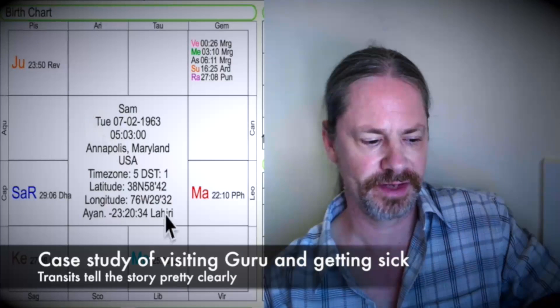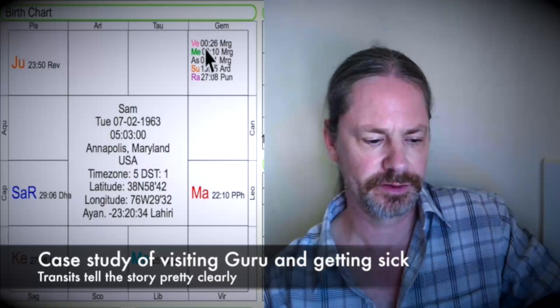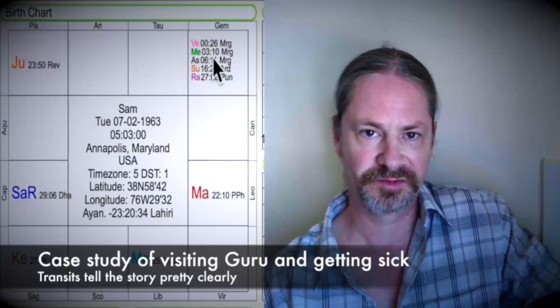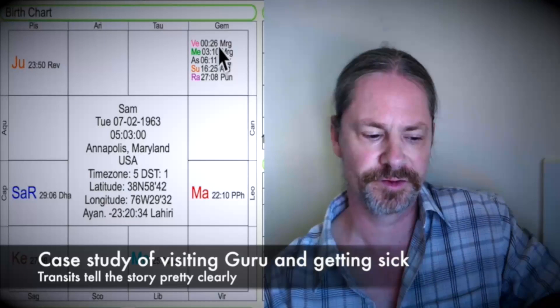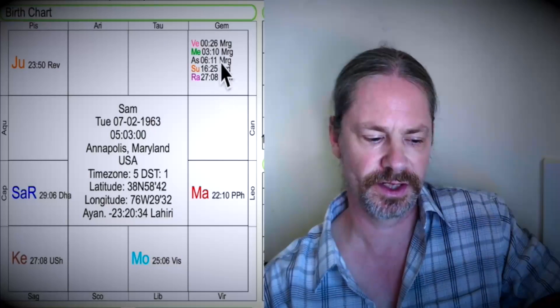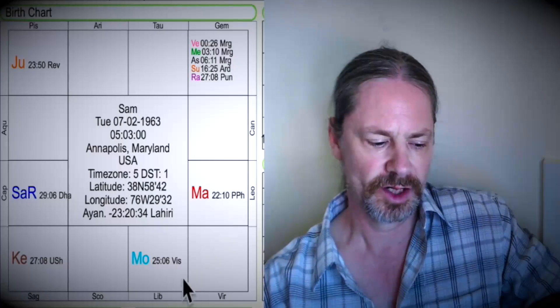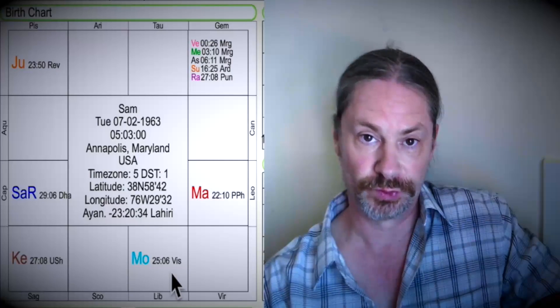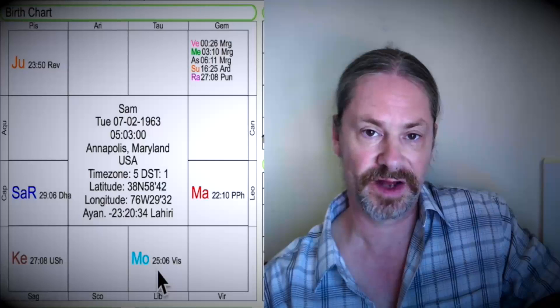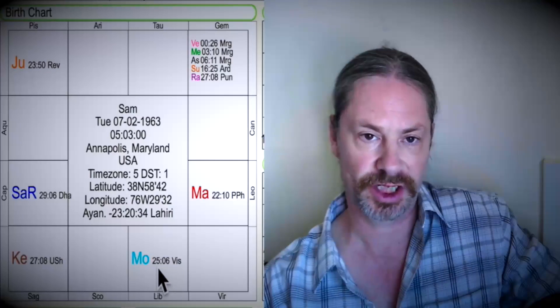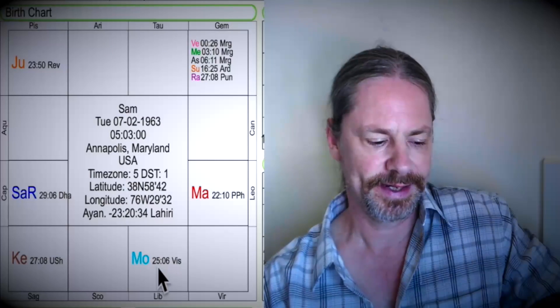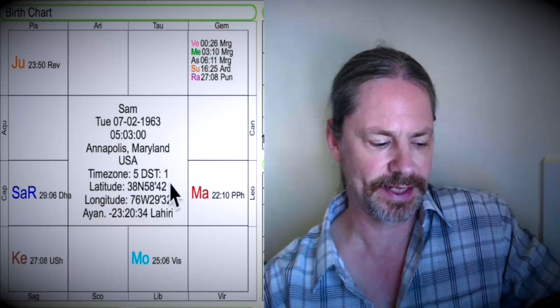But this is my chart: July 2nd, 1963, 5 a.m., Annapolis, Maryland. You see you've got this explosion of planets here in Gemini in the first house - Venus, Mercury, Ascendant, Sun, Rahu. But in particular you want to look at the moon. The moon is 25 degrees of Libra, Vishaka Nakshatra.